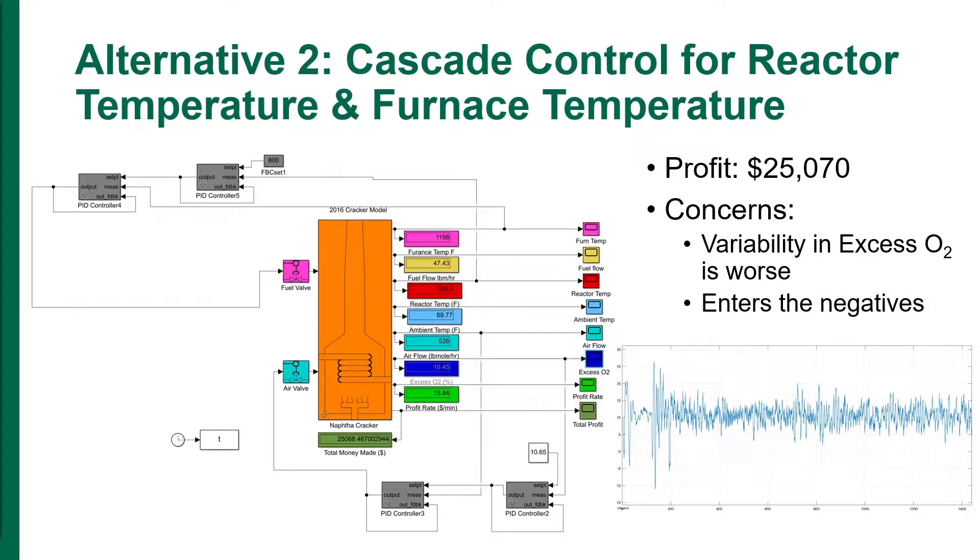The second alternative was to implement a cascade loop to replace the existing feedback controller between the reactor temperature and fuel flow, and the feedforward loop between the ambient temperature and the fuel valve.